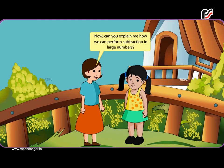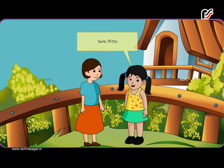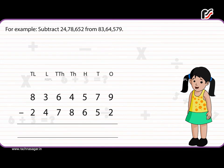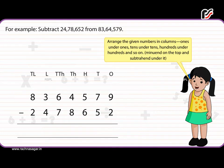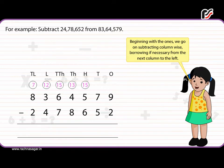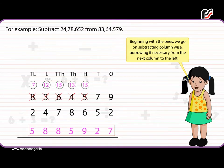Now, can you explain how we can perform subtraction in large numbers? Sure, I'll try. For example, subtract 24 lakhs 78,652 from 83,64,579. Arrange the given numbers in columns — ones under ones, tens under tens, hundreds under hundreds, and so on. Beginning with the ones, we go on subtracting column-wise, borrowing if necessary from the next column to the left.